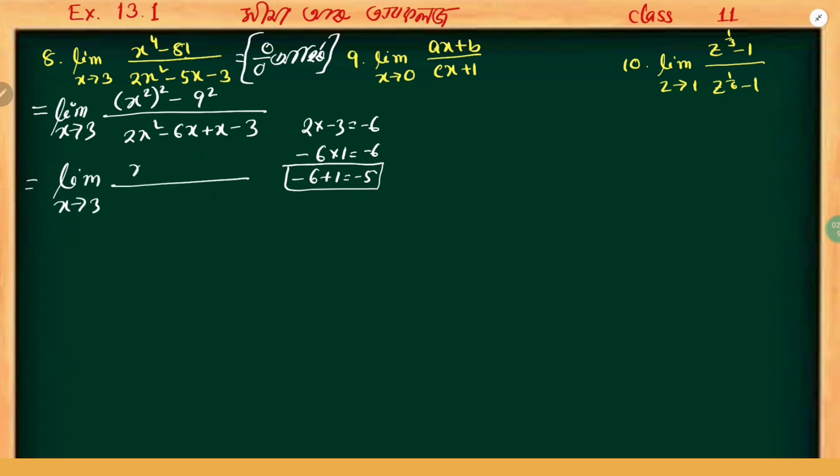Limit x tends to 3. X squared whole square, we can write as x squared minus 9 times x squared plus 9. In the denominator, we take 2x common to get x minus 3, then we get 2x minus 3 and x minus 3 common.